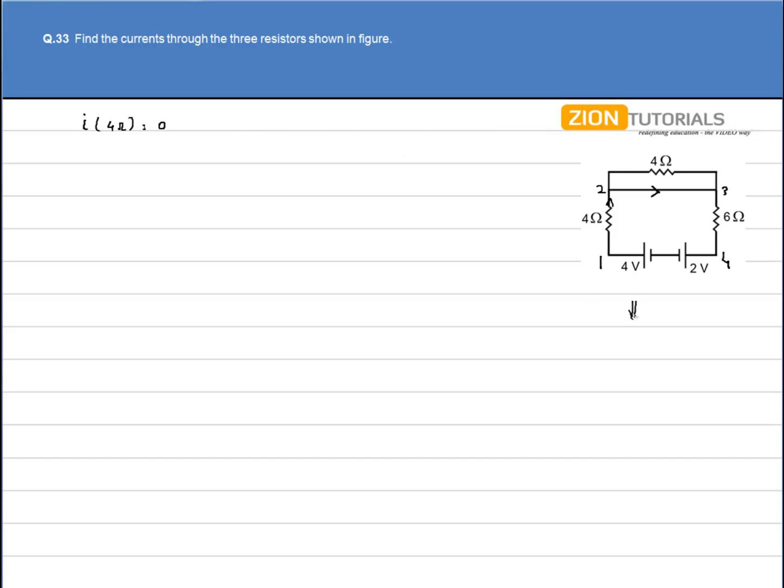our circuit simply reduces to a straight wire, 6-ohm resistor, a 4-ohm resistor, and batteries with 4v and 2v opposite polarity.